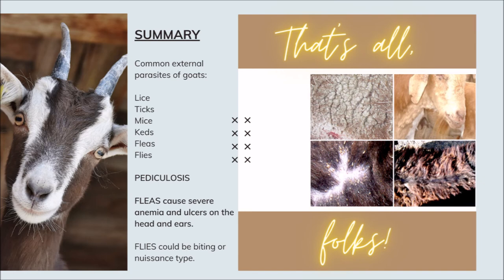Again, pediculosis is a chronic dermatitis characterized by constant irritation, itching, rubbing, and biting. For Part 3, we mentioned that fleas can cause severe anemia due to blood-feeding, are wingless, and only reside on the host when obtaining a blood meal. Aside from severe anemia, they may also cause ulcers on the head and ears, and transmission may occur from one host species to another. Notably, Ctenocephalides felis can lay up to 25 eggs per day for a month. Flies can be further categorized as biting flies or nuisance flies.